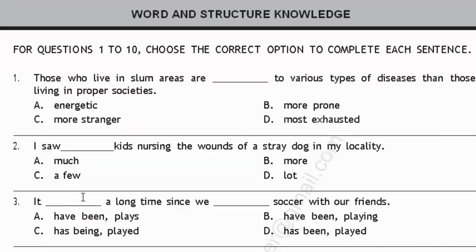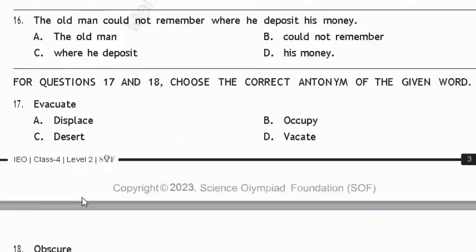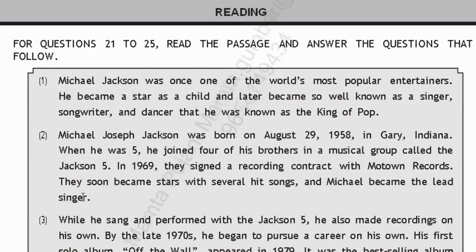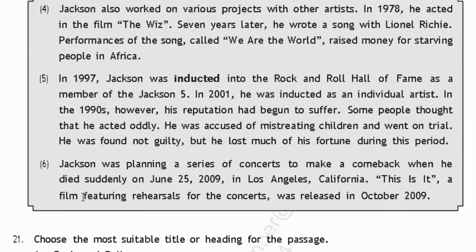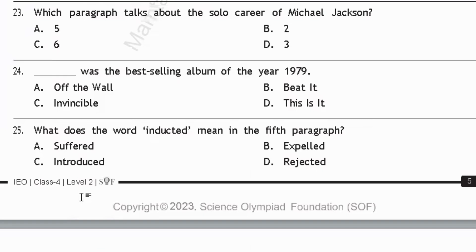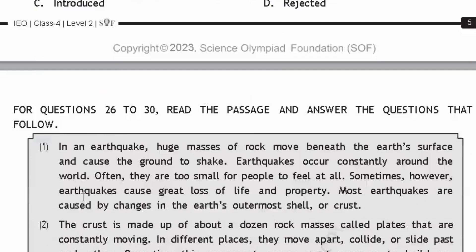Coming to the different sections of this paper, you will find three sections. The first section is called Word and Structure Knowledge, where you will get questions from grammar and vocabulary, and each question carries one mark. The second section is called Reading — here you will be given passages, you have to read them carefully and answer the questions that follow. Each question carries one mark, and compared to the whole paper, this is going to be your easiest section where you can score good marks.